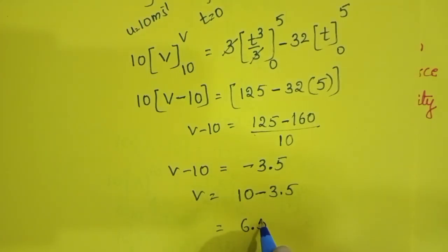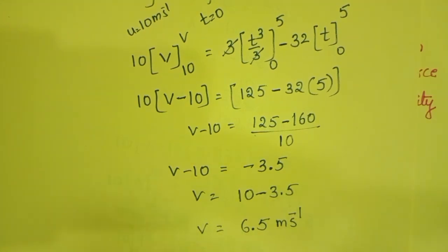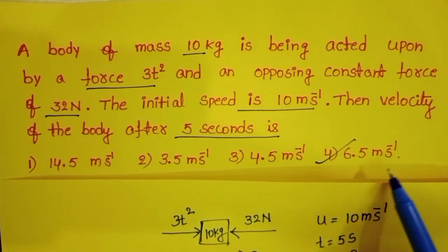The velocity of the body after 5 seconds is 6.5 m/s. Fourth option is correct.